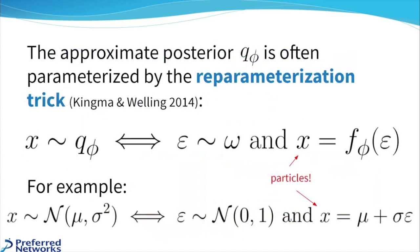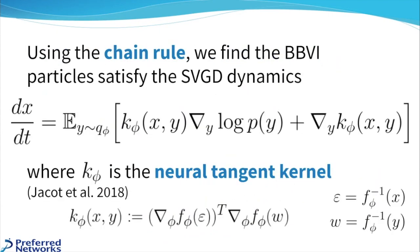What we've done by doing this is actually introduce particles into the picture, because the output of this function can be thought of as a particle. And when we compute what happens to this particle under the dynamics of gradient ascent, it turns out that using the chain rule, we find that the particles satisfy this ODE, and this ODE is exactly the SVGD dynamics that we saw earlier, where the kernel K is given by this neural tangent kernel.